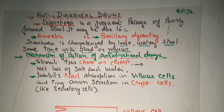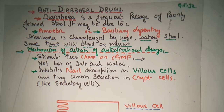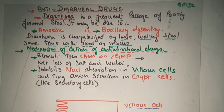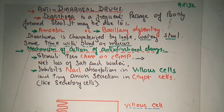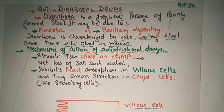Diarrhea is characterized by a loose, watery stool, sometimes with blood or mucus. Now what is the mechanism of action of antidiarrheal drugs? A stimulant increases cyclic AMP or cyclic GMP, resulting in a net loss of salt and water. They inhibit sodium chloride absorption in the villus cells of the intestine and increase anion secretion in the crypt cells.